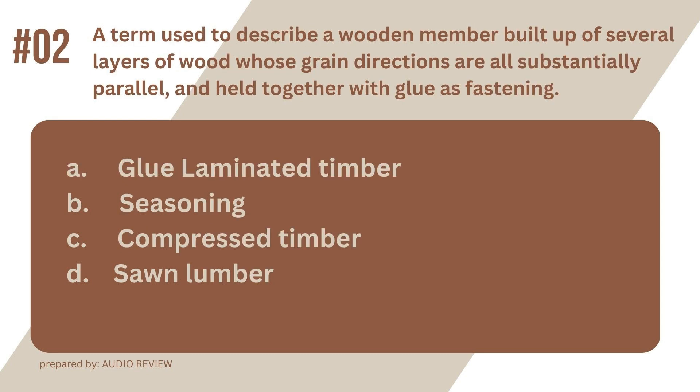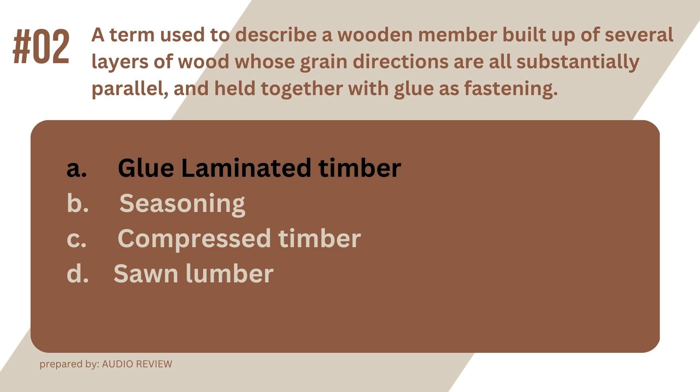Question 2. A term used to describe a wooden member built up of several layers of wood whose grain directions are all substantially parallel and held together with glue as fastening. A. Glue laminated timber. B. Seasoning. C. Compressed timber. D. Sawn lumber. The answer? It's A. Glue laminated timber. A term used to describe a wooden member built up of several layers of wood whose grain directions are all substantially parallel and held together with glue as fastening. Glue laminated timber.